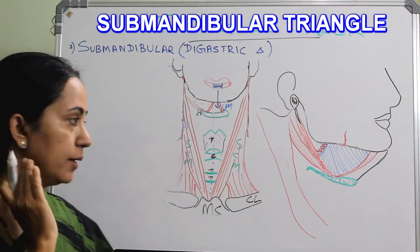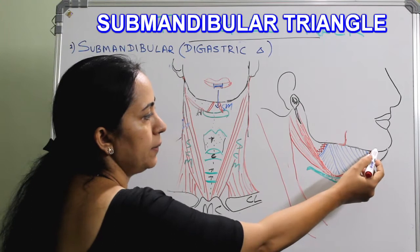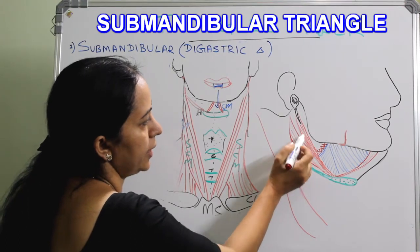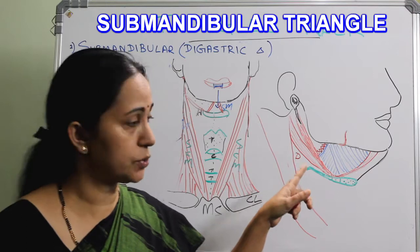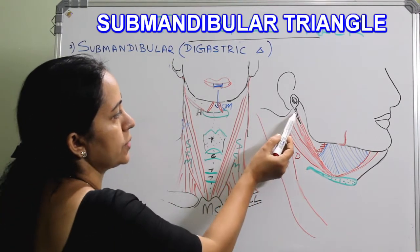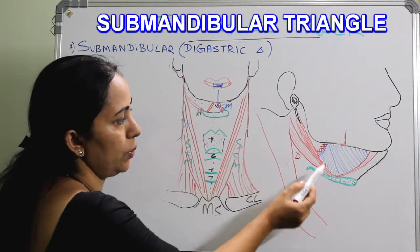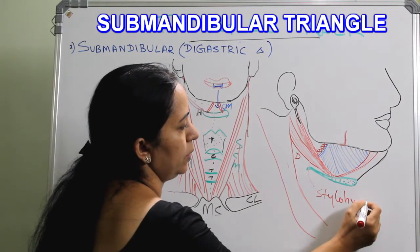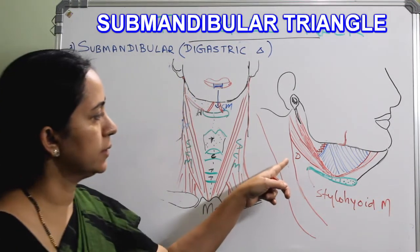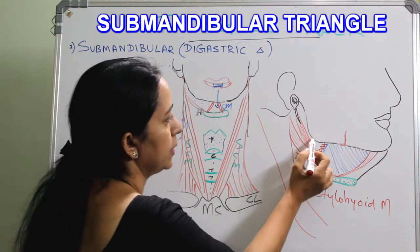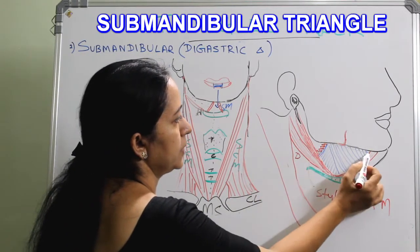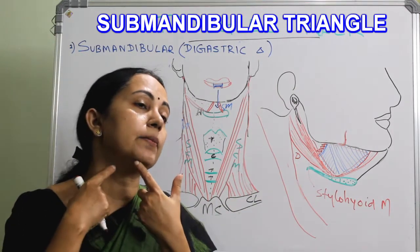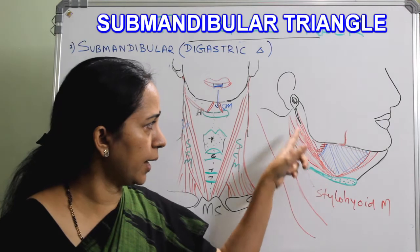In the lateral view of the neck, the digastric triangle is clearly seen — medially by the anterior belly of digastric, and posteriorly by the posterior belly of digastric. Along with the posterior belly, there is the stylohyoid muscle, running from the styloid process to the hyoid bone. So this is actually the submandibular triangle.